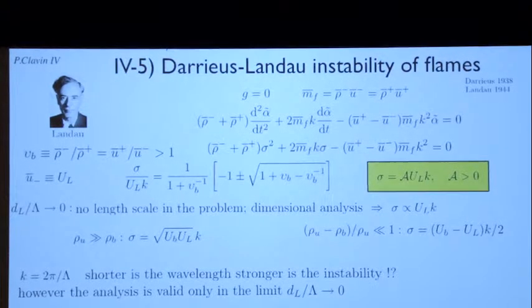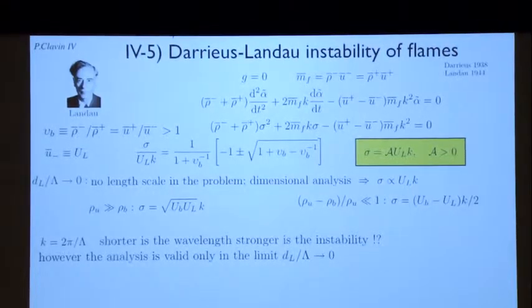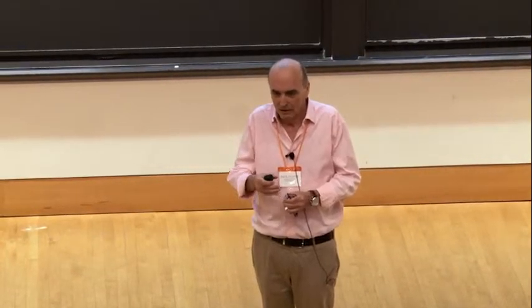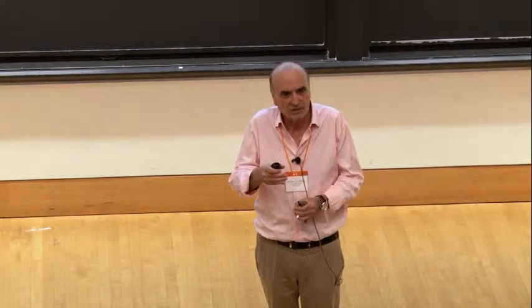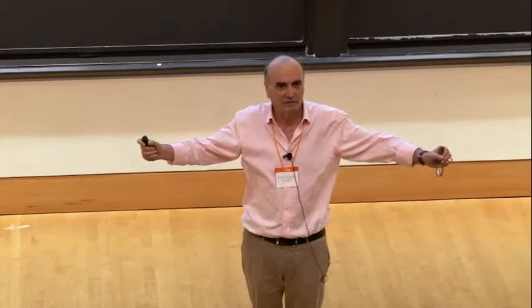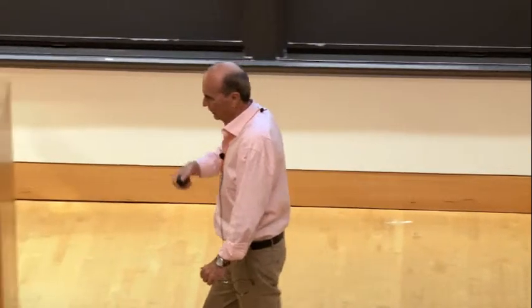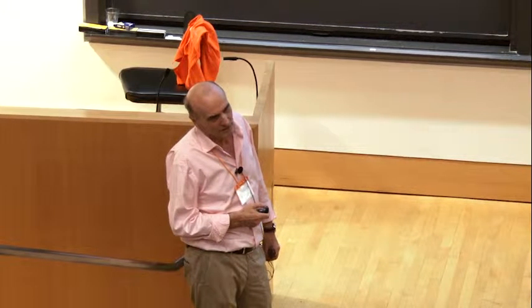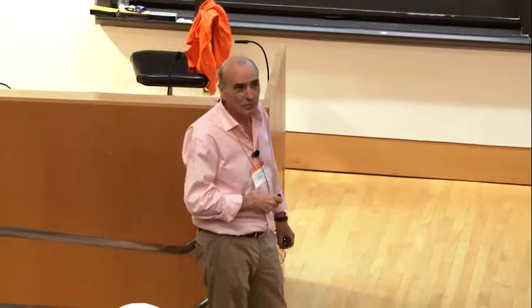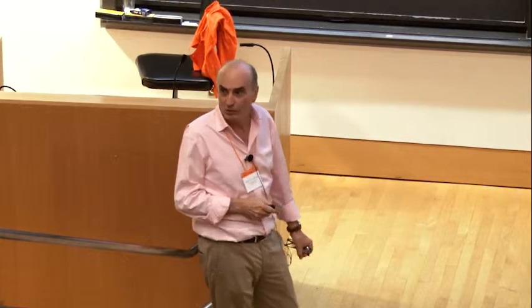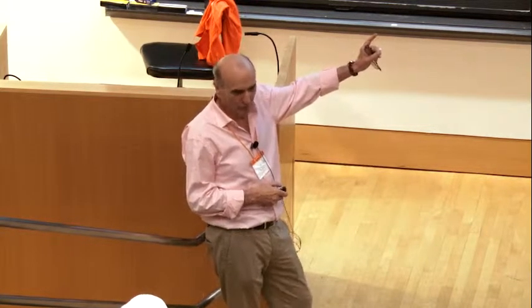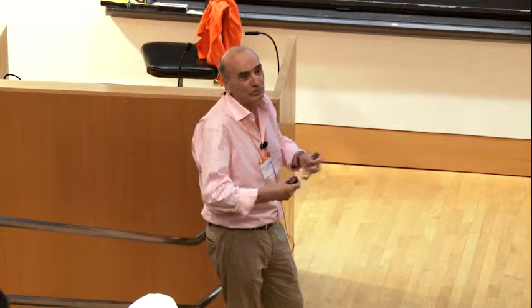Let's go back to the question of Landau: what happens for very small wavelengths? Something should be wrong there. The argument of Landau was the following: shorter is the wavelength, stronger is the instability — so the flame is going to break. And Zeldovich said, go to the lab and you will see that it's not right. What happens is that you have to stop this analysis when the disturbance wavelength becomes of the order of the flame thickness, because this analysis was only valid for wavelengths much larger than the flame thickness.